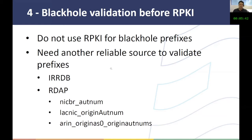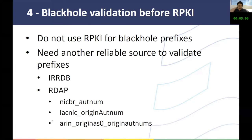The fourth methodology is not to use RPKI for black hole prefixes at all. You need another reliable source to validate the prefixes — very probably an IRR DB. You can also use RDAP that the registry authorities offer, though not all authorities provide direct origin of the prefixes. RIPE NCC and ARIN do, but there are others that don't.